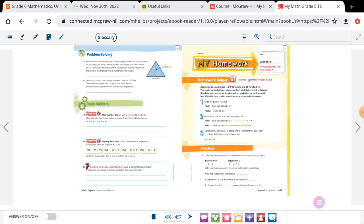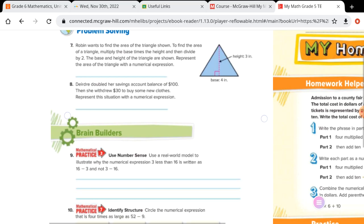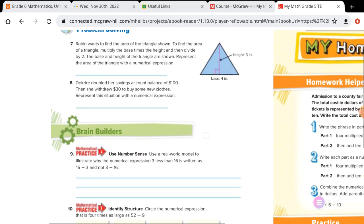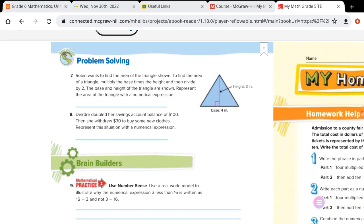Okay, Robin wants to find the area of the triangle shown. To find the area of a triangle, multiply the base times the height and then divide by two. Let's underline all of those words because that's telling us what to do. Multiply the base times the height, then divide by two.